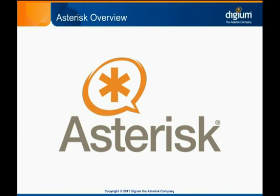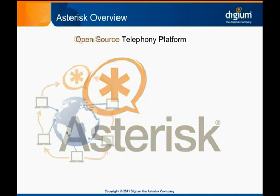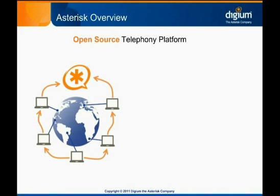Perhaps the simplest, yet most exact, single-sentence description of Asterisk is that it is an open-source telephony platform. It's open-source, which means that the individual lines of code that define the program are freely available to anyone who wants them. This means that developers from all over the world can and do continually make improvements to the software. In fact, Digium credits over a thousand individuals as contributors to the main Asterisk code base.